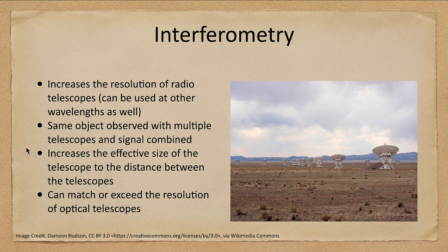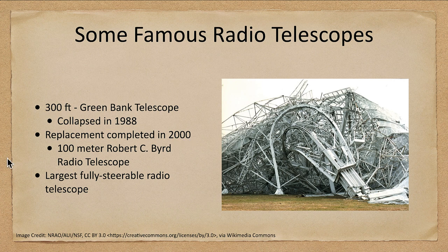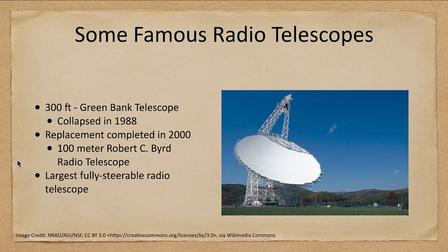Let's look at some famous radio telescopes. Here's one that doesn't look in too good condition — this is the 300-foot Green Bank telescope, which collapsed in 1988. The replacement was completed around 2000, about 12 years later. This is the 100-meter Robert C. Byrd radio telescope, the largest fully steerable radio telescope that exists, built to replace the collapsed Green Bank.